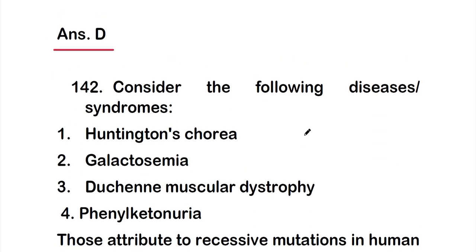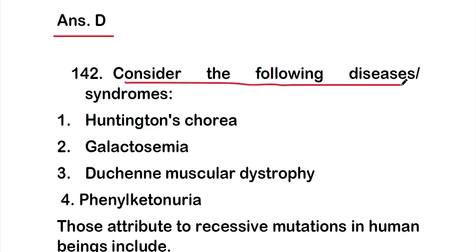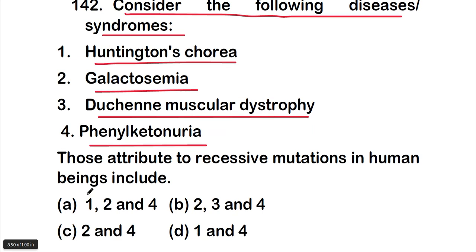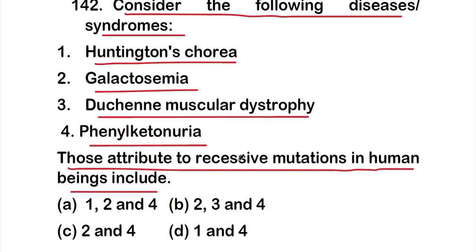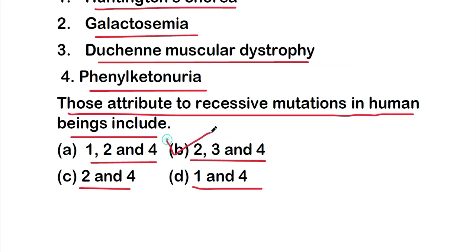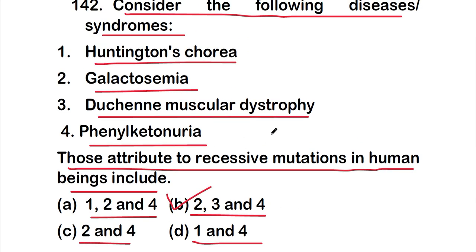Question 142: Consider the following diseases or syndromes — (1) Huntington's disease, (2) galactosemia, (3) Duchenne muscular dystrophy, (4) phenylketonuria. Among these, those attributable to recessive mutations in human beings are: option A — 1, 2, and 4; option B — 2, 3, and 4; option C — 2 and 4; option D — 1 and 4. The correct answer is option B: 2, 3, and 4 — galactosemia, Duchenne muscular dystrophy, and phenylketonuria are recessive mutations.